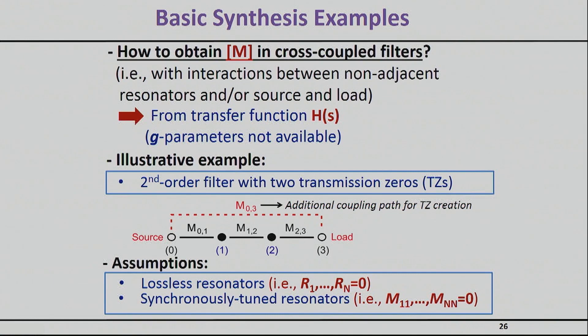So here's an illustrative example I'm going to work with you guys for a second order filter that will include two transmission zeros.